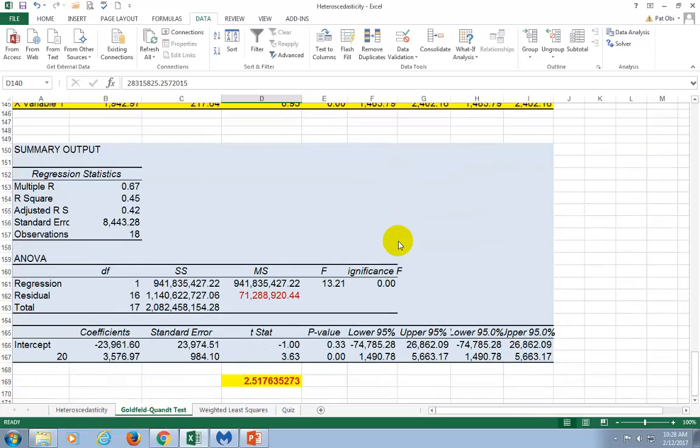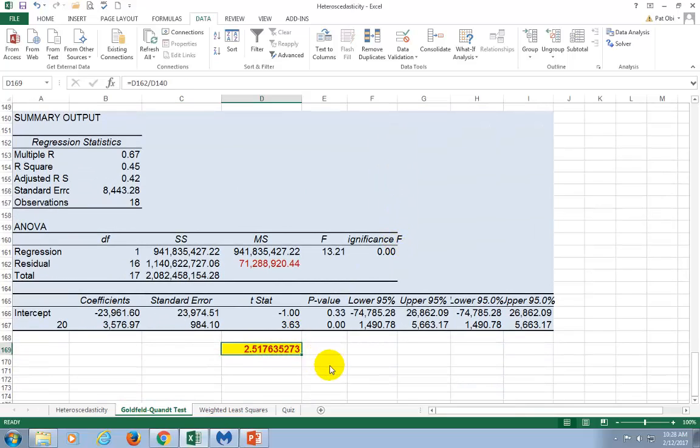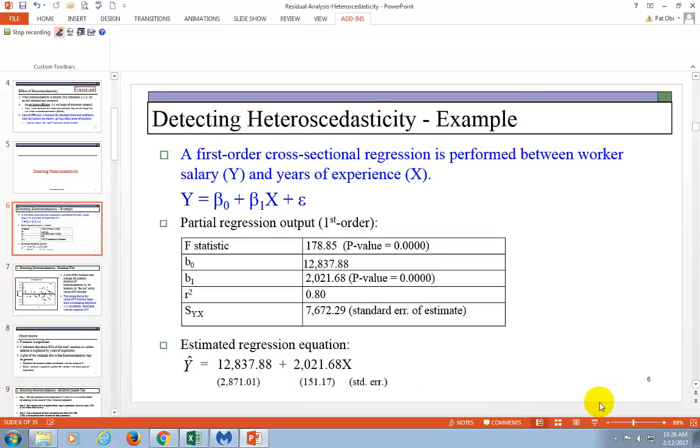And then I calculate the F statistic, which is going to be the larger mean square error divided by the smaller mean square error. And that's going to give me 2.52. You can see the division right there. And here's the summary.